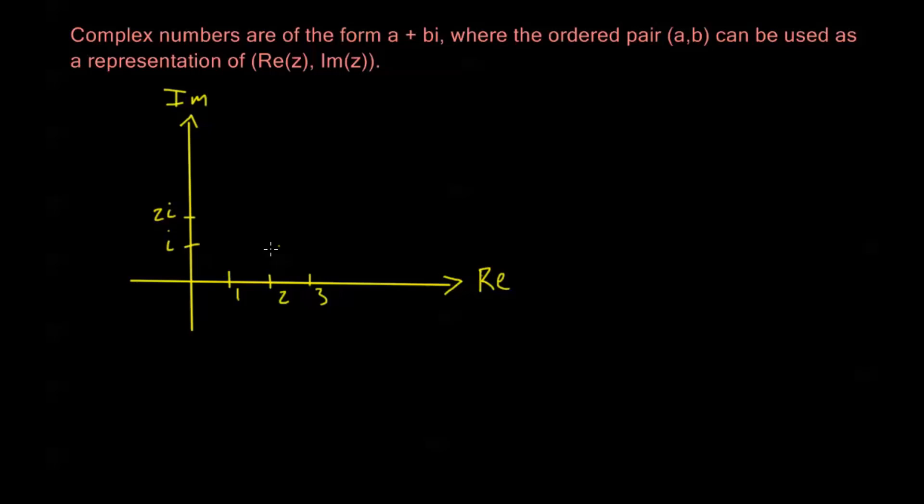And everything in between these axes are the combinations of all of these real and imaginary numbers. So if we have some number, let's say we have some number A plus BI out here, the variable we usually use for complex numbers is the letter Z. We use X and Y for real numbers and Z is usually reserved to indicate a complex number.